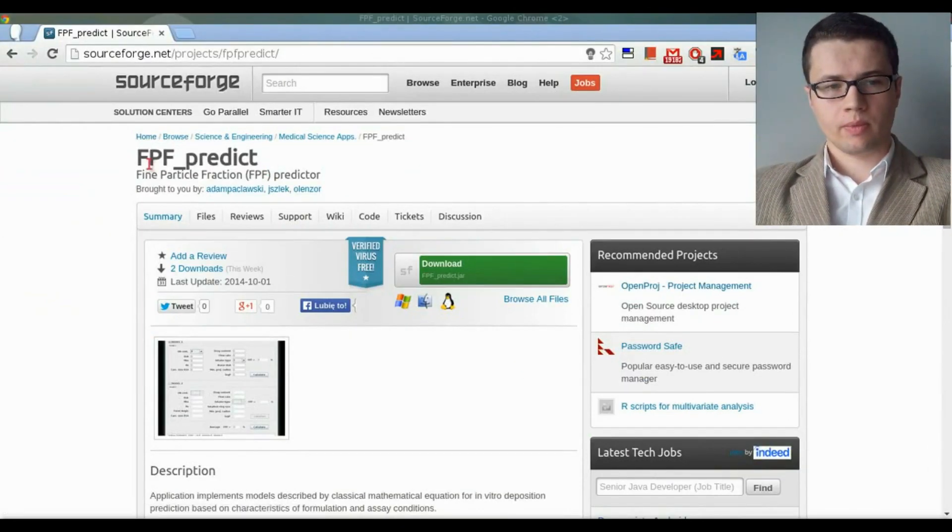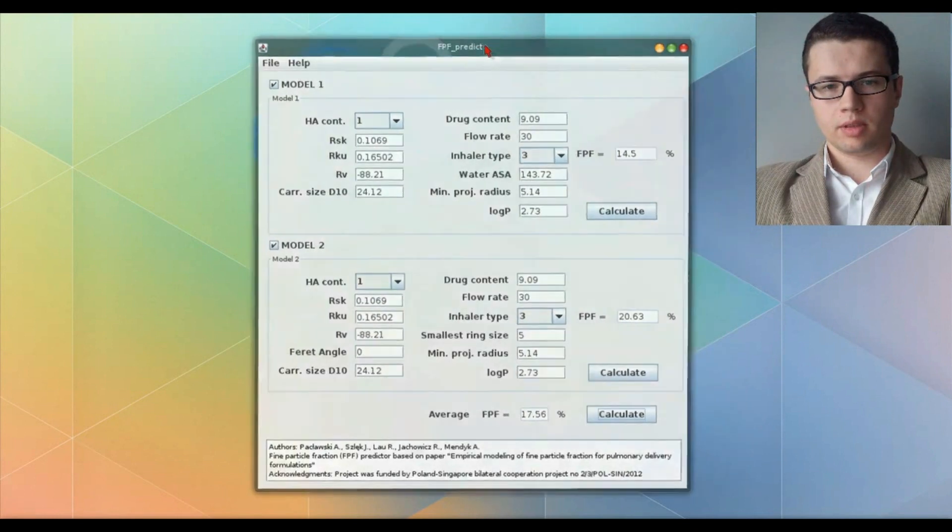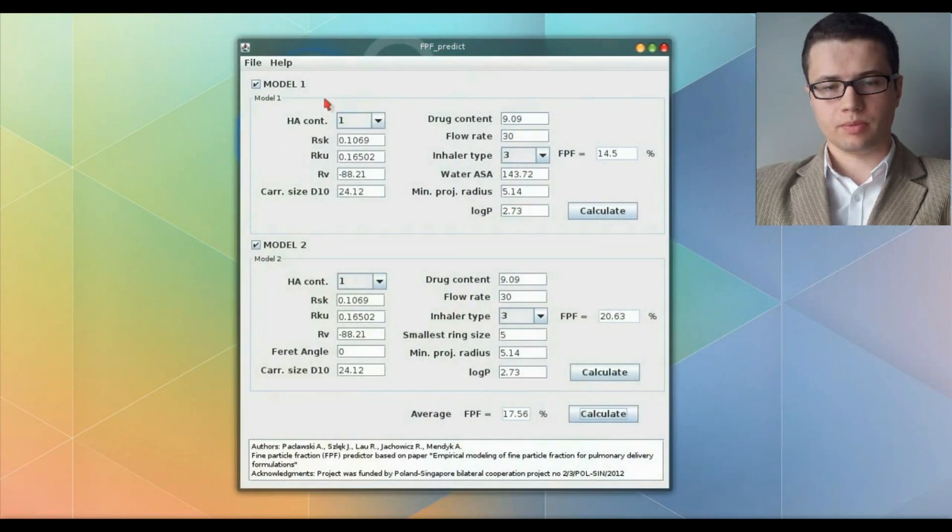It is available on the SourceForge web page. And this is a simple small graphic user interface program. We implemented two models here. The first one you saw on the slide. The second one is also described in the article. You just fill in proper fields here, click calculate, and as the output you have fine particle fraction for your formulation. For example, for higher flow rate, in my case it is higher fine particle fraction.